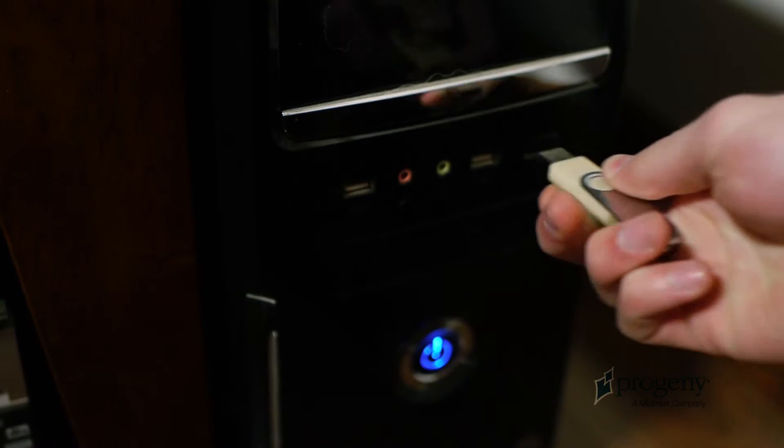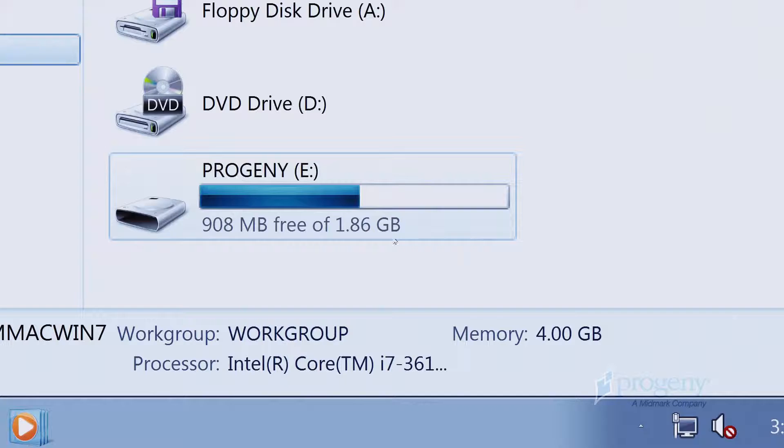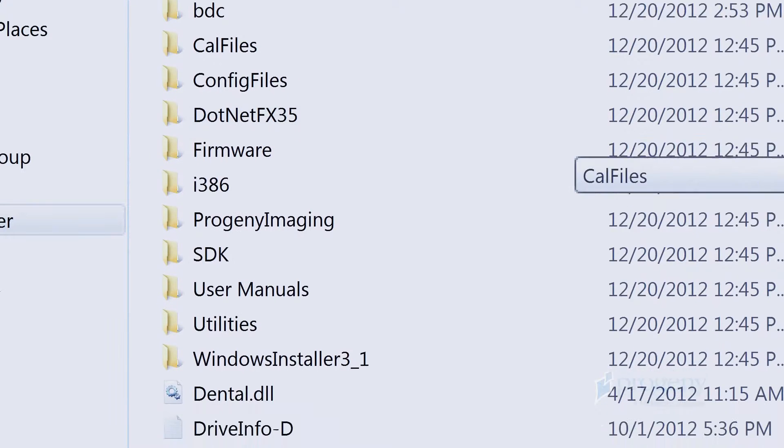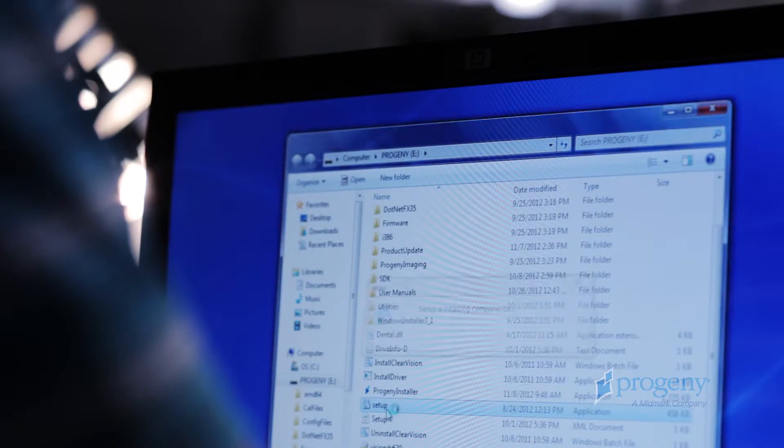If the software does not start up an installation automatically, navigate to Windows Explorer and select the Progeny drive letter. Browse to the content of the flash drive and double-click on setup.exe.